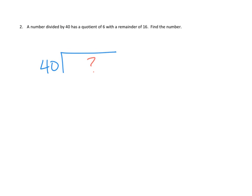It has a quotient of 6 with a remainder of 16. Find the number. Hmm, so this isn't, even though this is sort of set up like the standard algorithm, we're not actually doing the problem, because it's like we already got the answer. So I'm thinking, maybe we can use our checking process.